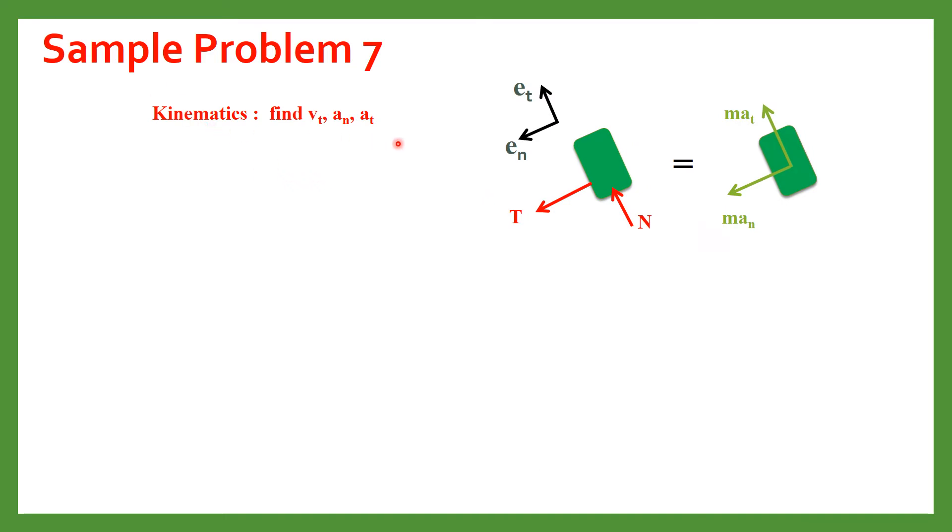Now we will write the kinematics for this problem. So this V has given V so we can calculate the acceleration by differentiating this. So AT is simply dV by dt which will be equal to 2 meter per second square and the acceleration in the normal direction you can calculate by using this relation for normal and radial motion. So that is equal to V square by R. Here we have denoted R by Rho. So this V is 5 and this R is 0.4. So now we have calculated both the accelerations.